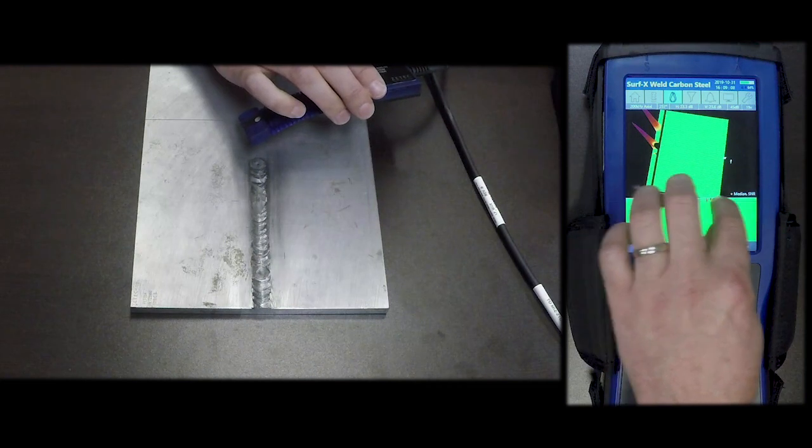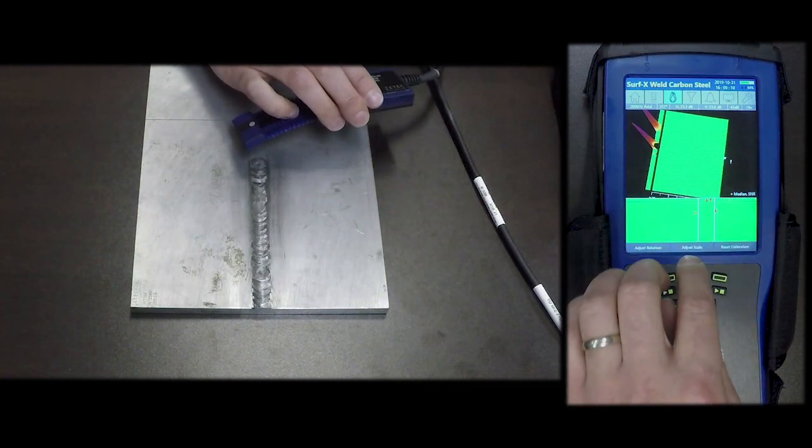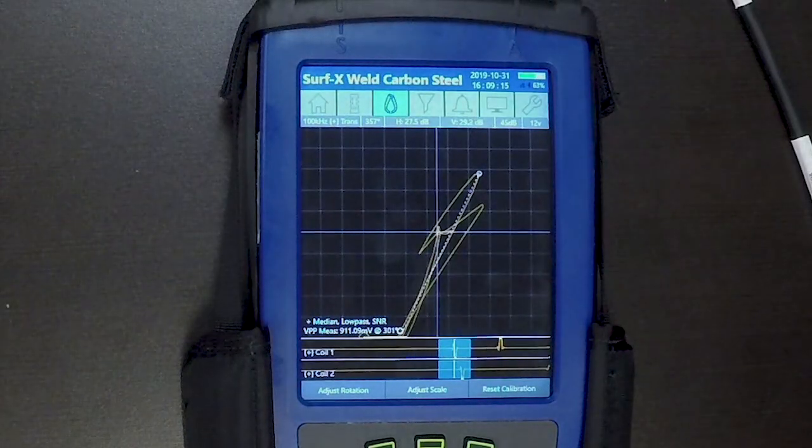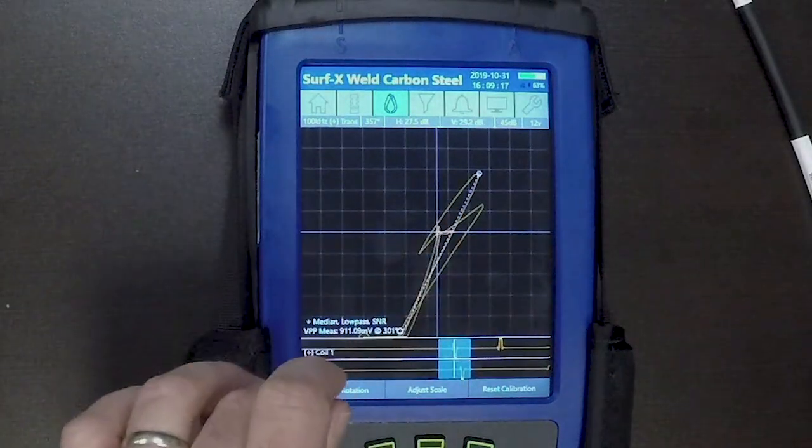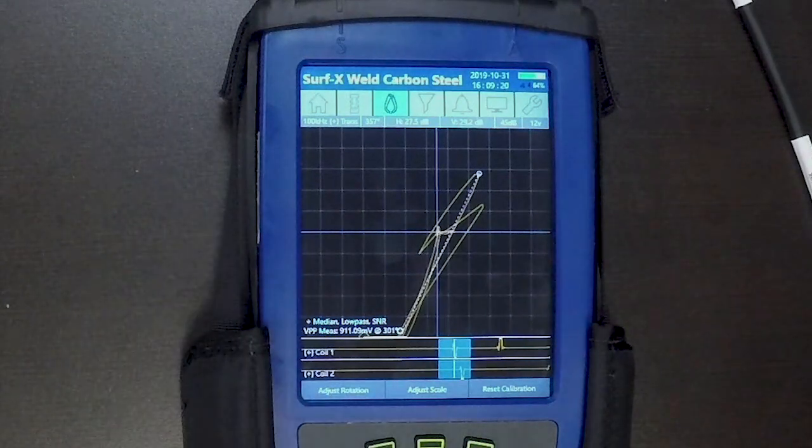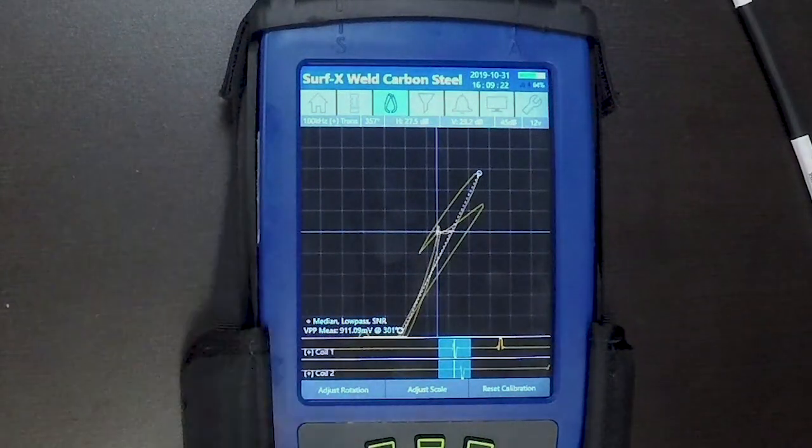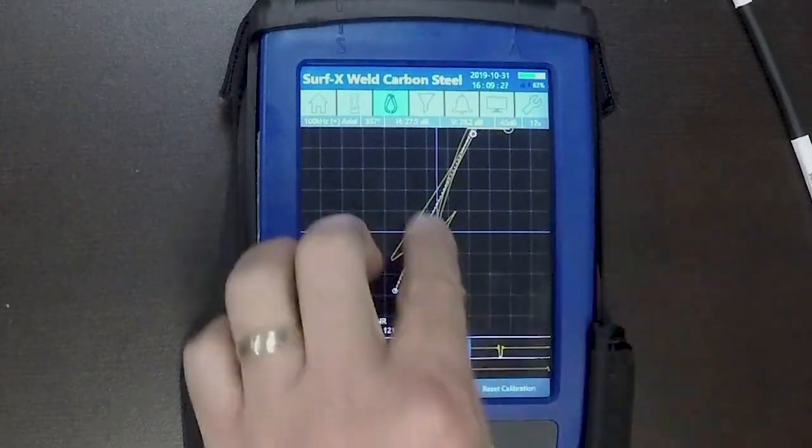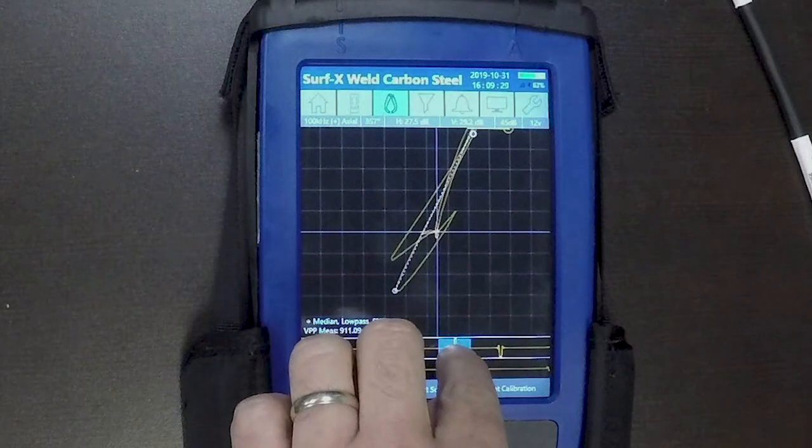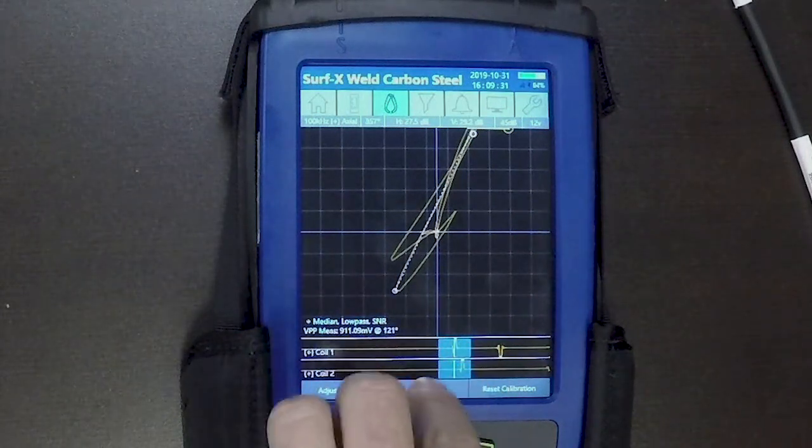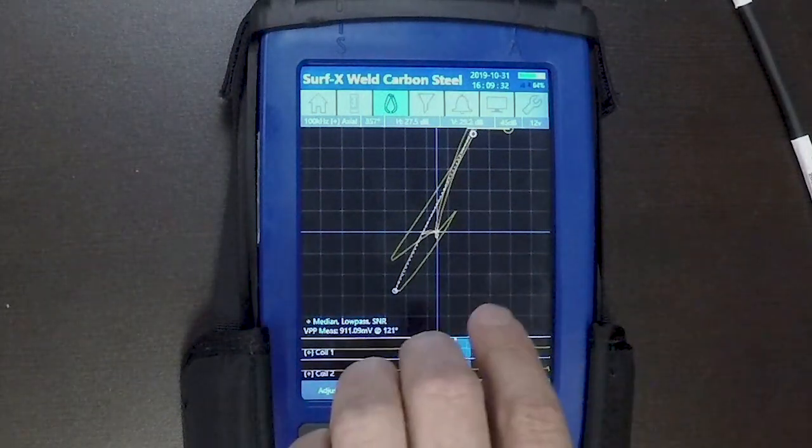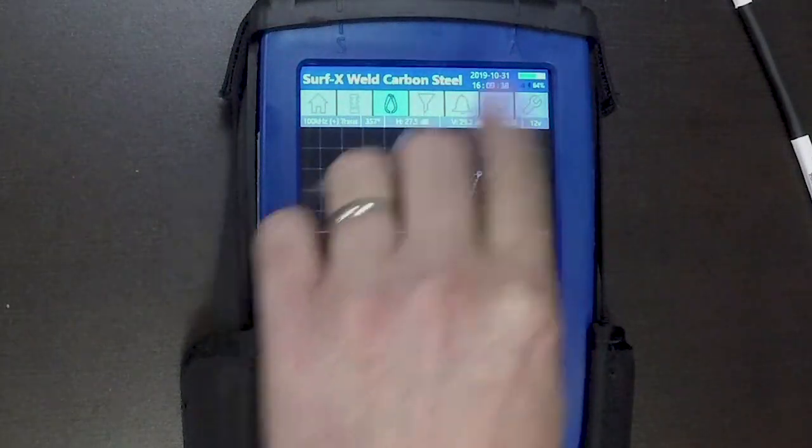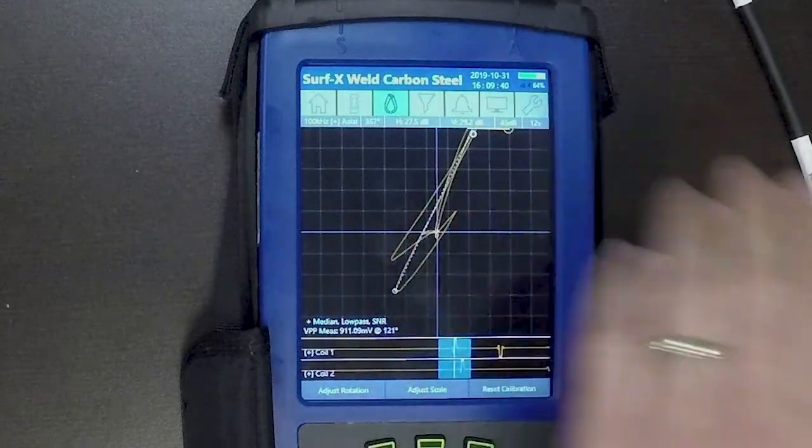If you switch over to your standard impedance view, you can see the two plus point channels. In the transverse it goes in a downward direction, in the axial it goes in an upward direction of the flaw signal. You can see the slight offset of the two coils, and that flip between the signal orientation down and up is a typical signal that you'll see from a plus point.